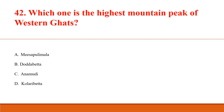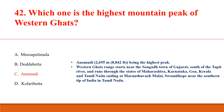Which one is the highest mountain peak of the Western Ghats? Answer C: Anamudi, 8,842 feet, being the highest peak. The Western Ghats range starts near the Songadh town of Gujarat, south of the Tapi river, and runs through the states of Maharashtra, Karnataka, Goa, Kerala, and Tamil Nadu, ending at Marunthuvazh Malai near the southern tip of India in Tamil Nadu.